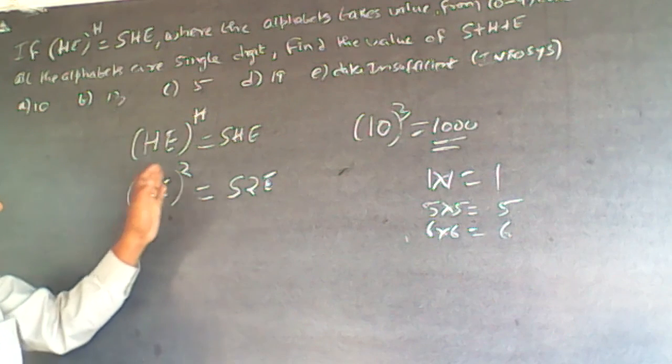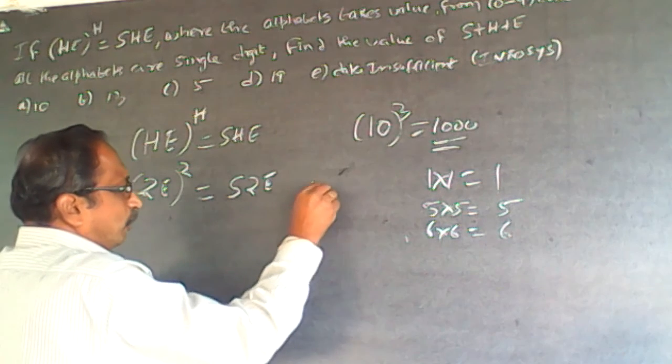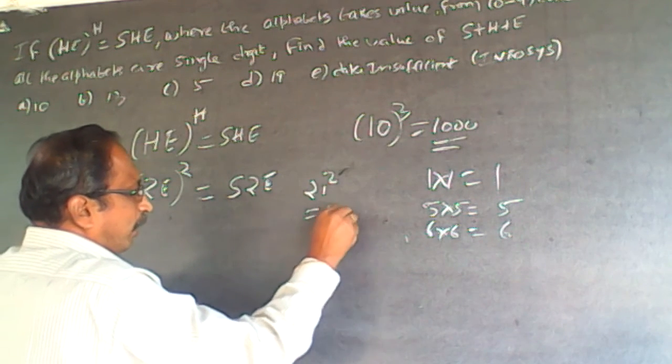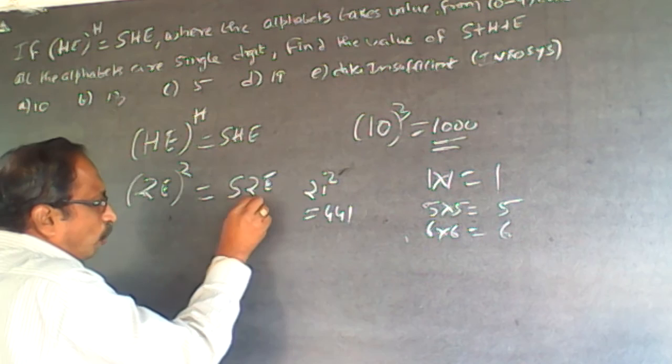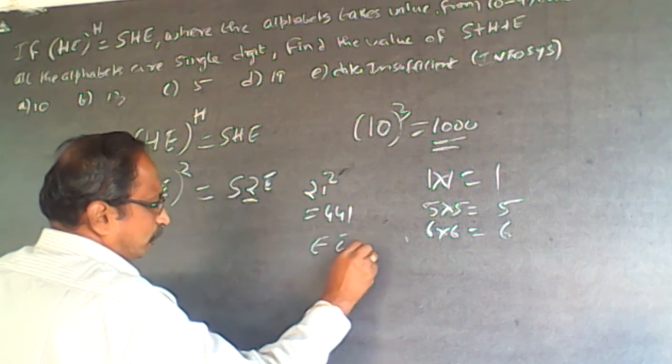Supposing E is 1. 21 square will be 441. So what happens is here I have got 2. So E 1 is pulled out. E can't be 1. E is not 1.